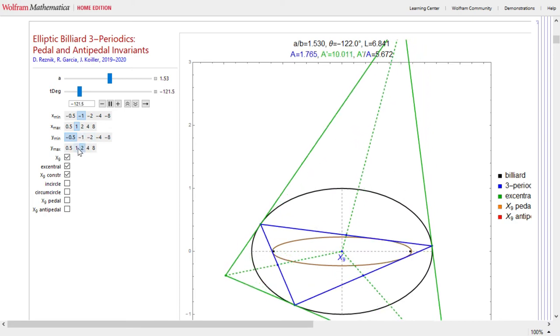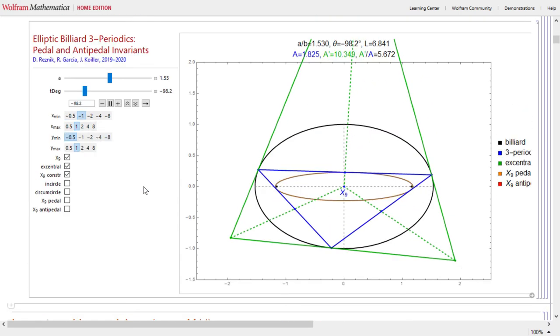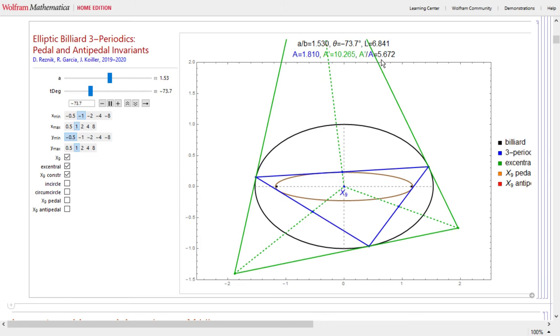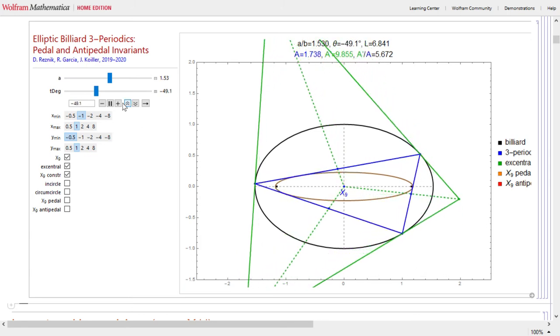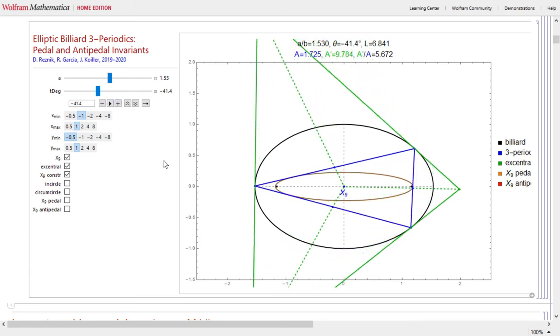I can see it's invariant. I can also observe that though the ratio has changed, it's still invariant. In fact, we noticed later that this invariance is true for any n-periodic.